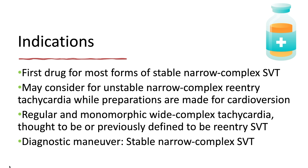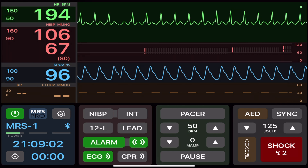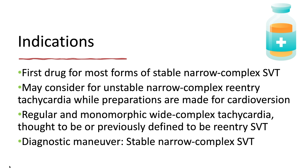Adenosine is the first drug for most forms of stable narrow complex supraventricular tachycardia, or SVT, and is effective in terminating rhythms due to re-entry involving the AV node or sinus node. We may consider it for unstable narrow complex re-entry tachycardias while preparing for cardioversion, and for regular monomorphic wide complex tachycardia thought to be re-entry SVT. It is also used as a diagnostic maneuver. Keep in mind that adenosine does not convert AF, atrial flutter, or ventricular tachycardia unless it's a ventricular outflow tract VT.